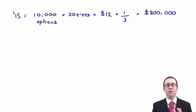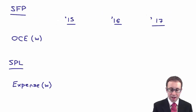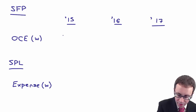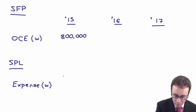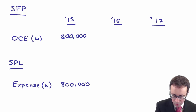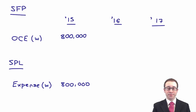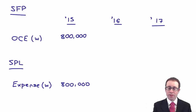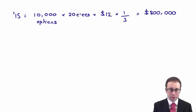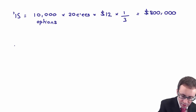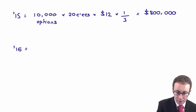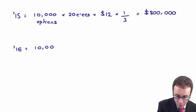At the start of the year, nothing had been recognised as an expense or as any equity. So to get to $800,000, we need to credit our other components of equity and debit the expense — because we've gone from zero up to $800,000. The first year of any scheme is normally pretty straightforward. It's usually when we move on to the second year that things get a little bit more challenging.